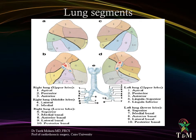Lung segments: there are ten segments on the right lung and nine segments on the left lung, totaling nineteen segments. The right lung upper lobe consists of three segments: apical, posterior, and anterior. The right lung middle lobe consists of two segments: the lateral and the medial. The right lung lower lobe consists of five segments: the superior, medial basal, anterior basal, lateral basal, and posterior basal.